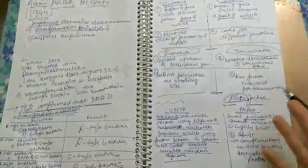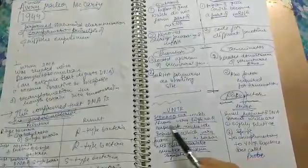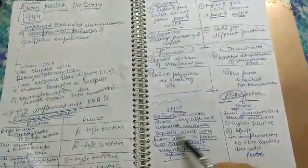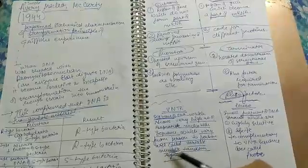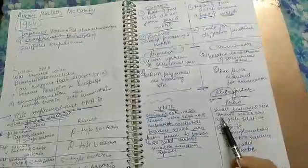First is the difference between VNTR and probe. Segments of DNA which show very high number of repeated nucleotide sequences which vary from person to person are called Variable Number of Tandem Repeats. Probes are small fragments of DNA strands which are highly selective, specific, and complementary to VNTR sequences.